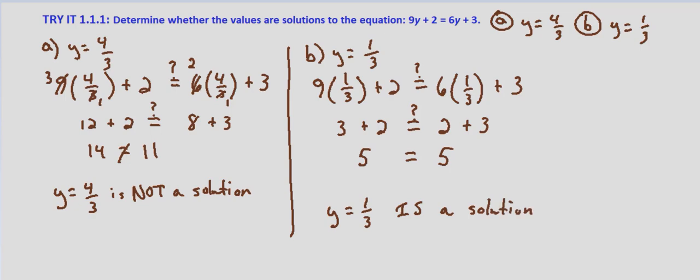And the process would be the same for any instance in which we're given an equation and we're asked to determine if a value is a solution. We substitute the value into the equation. If when we simplify, we end up with an untrue statement, 14 equals 11, then the value is not a solution. If we end up with a true statement, such as with 5 equals 5, then the value given is a solution to the equation.